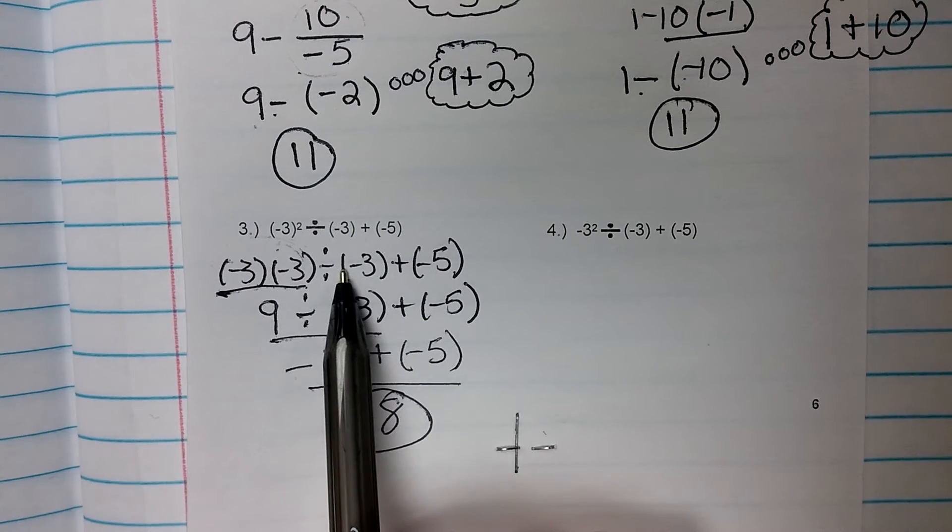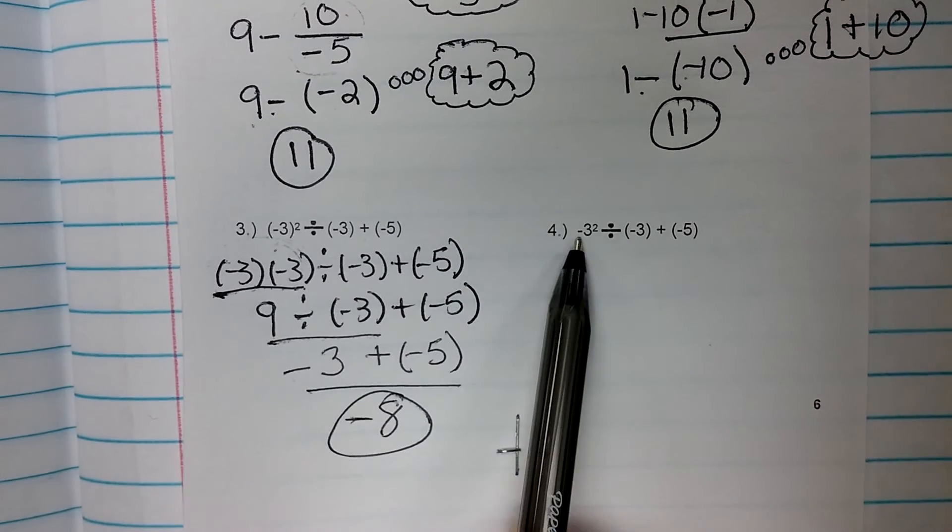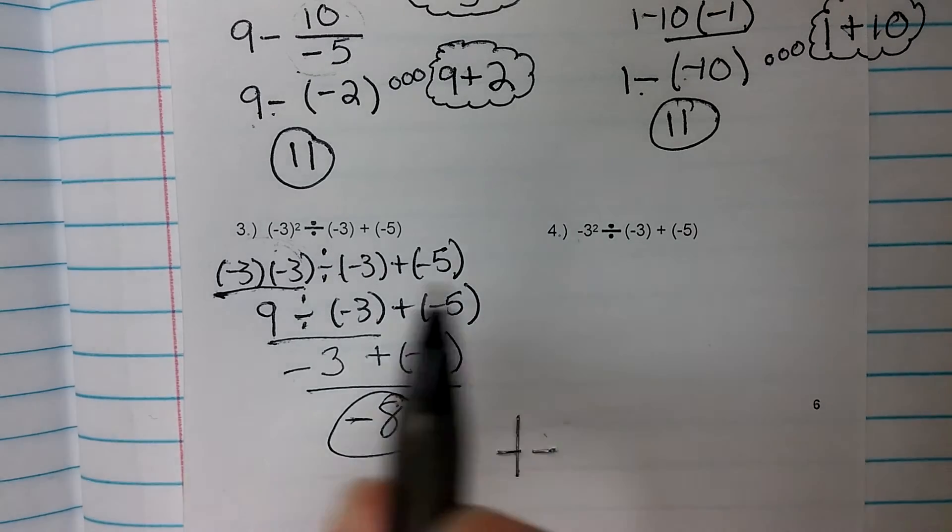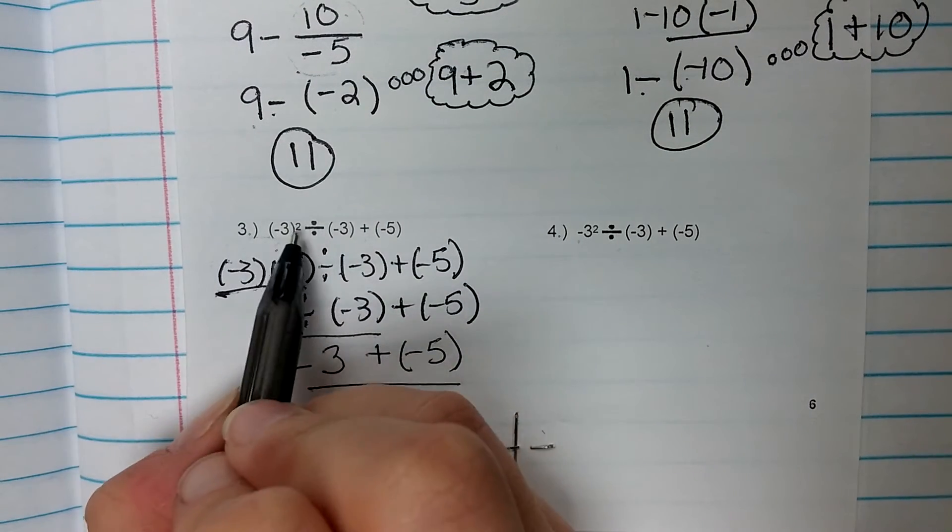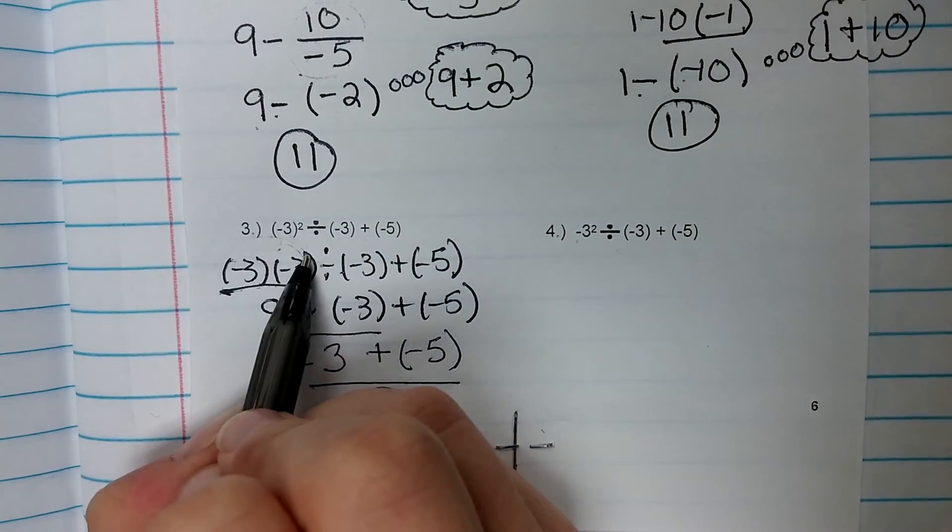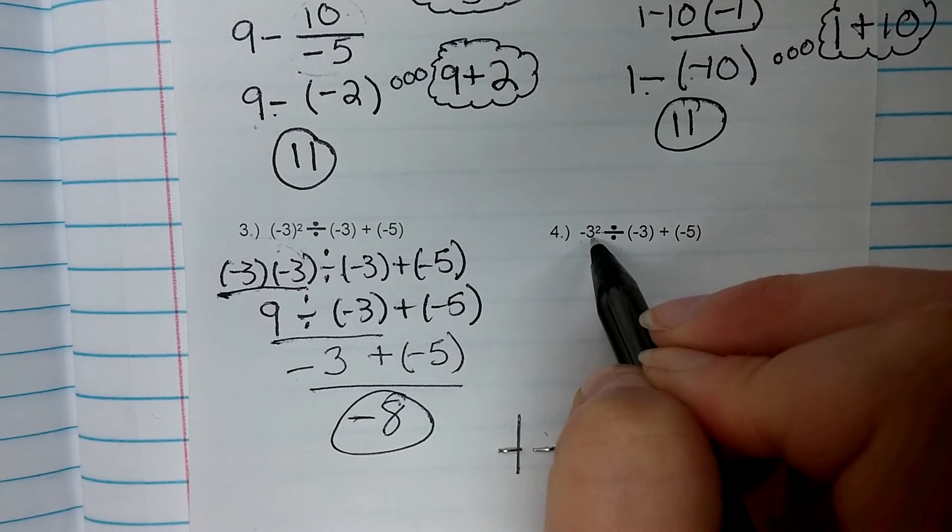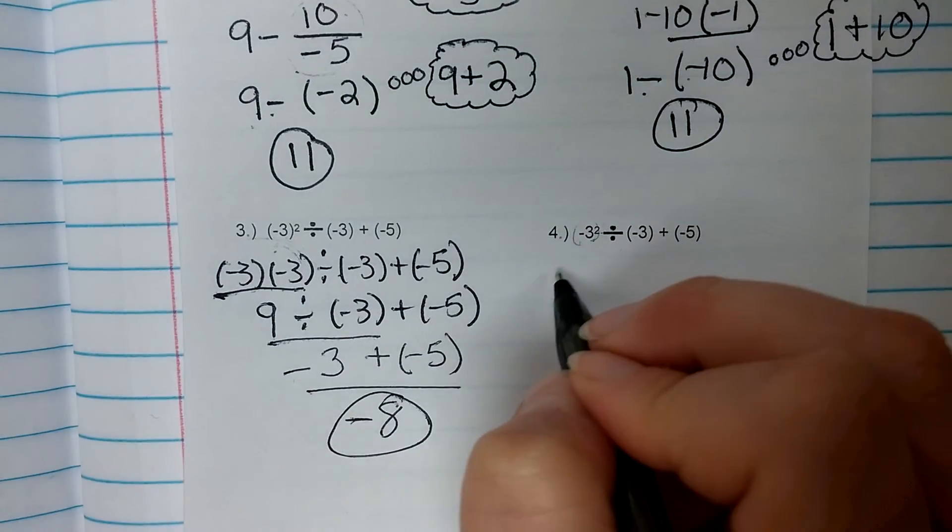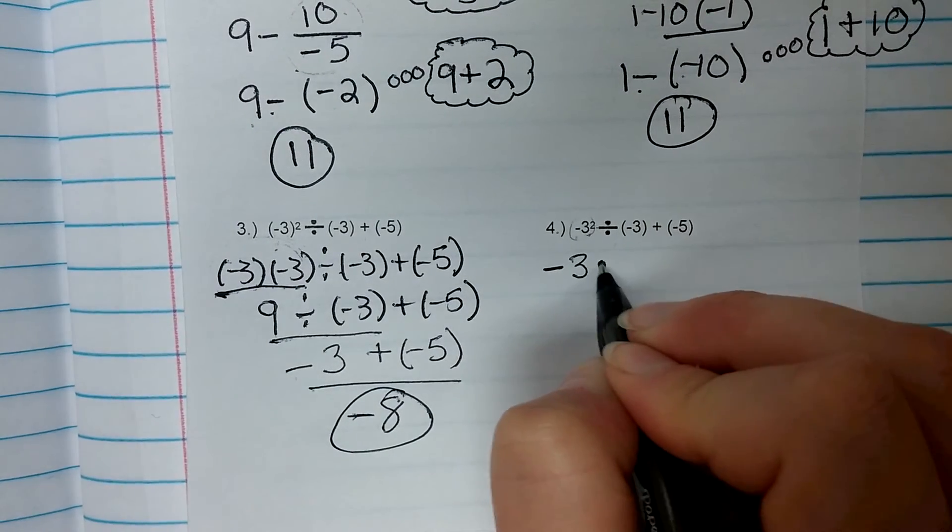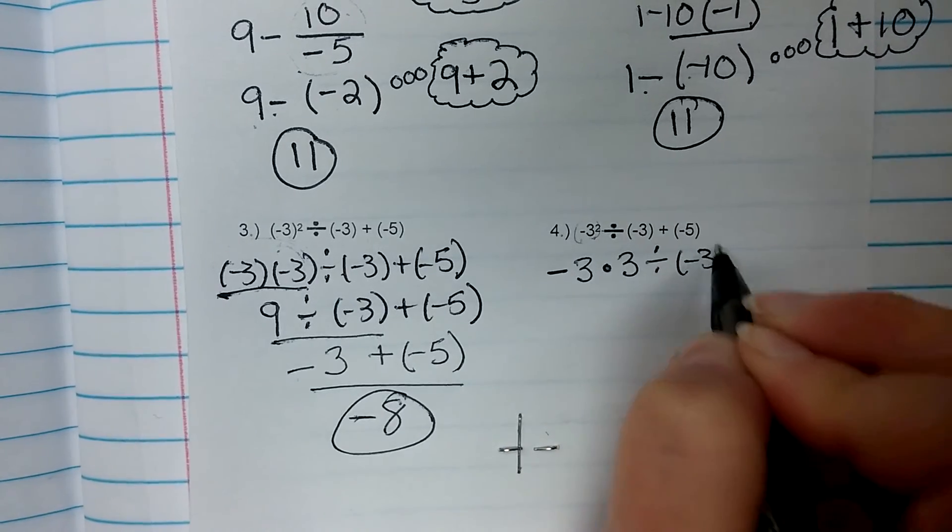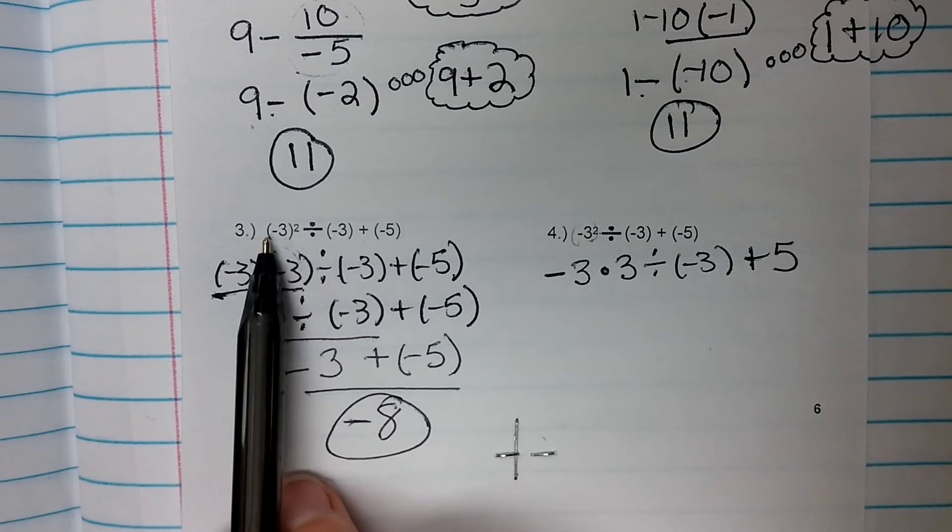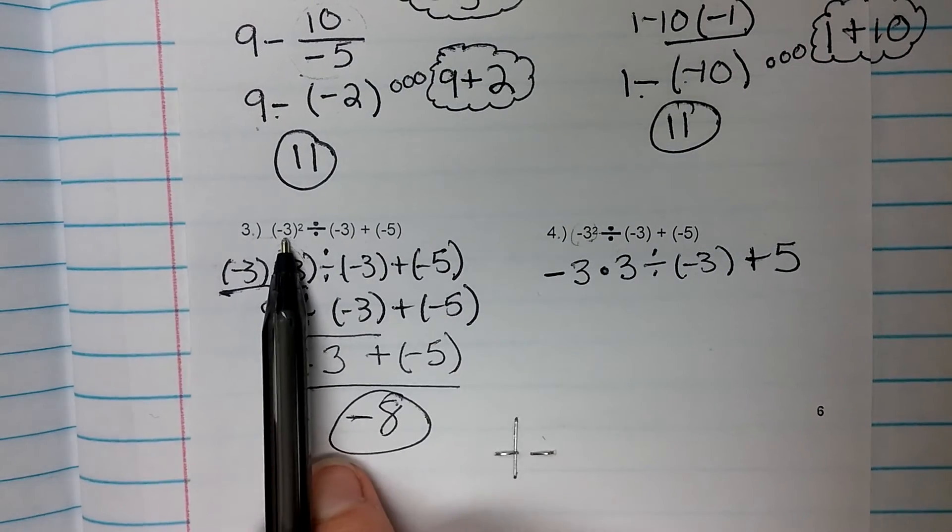Number 4 is almost the same as number 3, except for one minor detail. The parentheses around the negative 3 are missing, and this makes this problem a little bit different. So for this problem, the squared saw the negative sign and the 3, so your base was a negative 3, negative 3 times negative 3. For this one, the squared only sees the 3 because there's no grouping symbols around there. So this one, the negative hangs out in front and your base is just the 3. So 3 times 3 divided by negative 3 plus 5. So there is a difference, and you've got to pay careful attention to whether or not the negative is grouped with the integer or not.